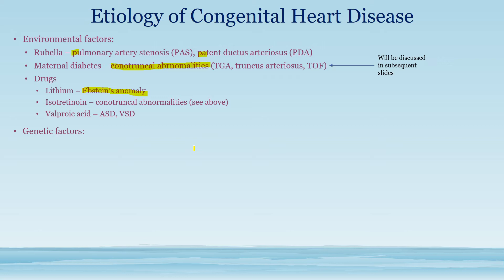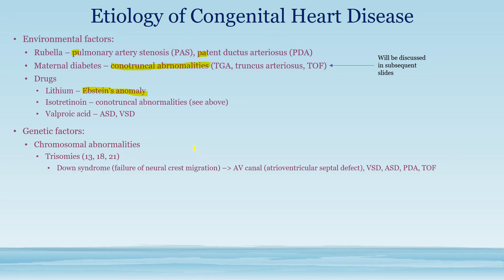Now we have genetic factors, which can also play a huge role in congenital heart disease. We have chromosomal abnormalities such as Down syndrome, Edwards syndrome, and Patau syndrome. Down syndrome specifically involves a failure of neural crest migration. Neural crest cells leave the neuroectoderm and migrate throughout the body, and failure of this migration can cause many heart defects. The atrial and ventricular septa, the valves, and the division of the truncus arteriosus into the aorta and pulmonary artery via the aorticopulmonary septum are all formed by neural crest cells.